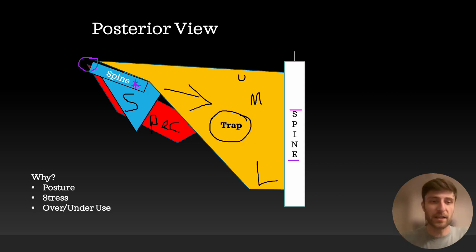The lower trap is the key to pulling this down and back, kind of along. I'll change the color. Let's go blue. Down and along this line this way. You can see how that directly runs counter to where the pec is trying to pull. And keep in mind, all this is from the posterior view, right? So we're looking from the back of somebody. That's how we can see the spine and the trap, trapezius and the scapula and stuff.